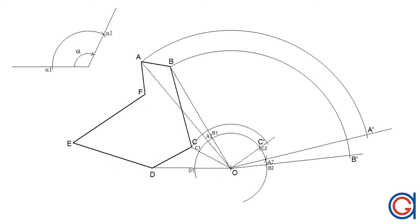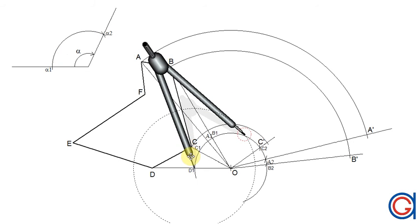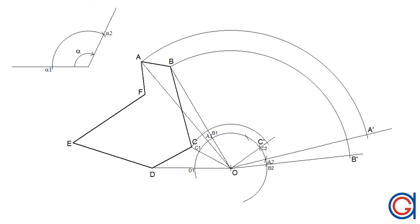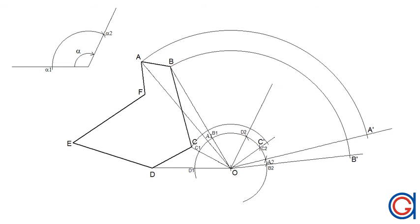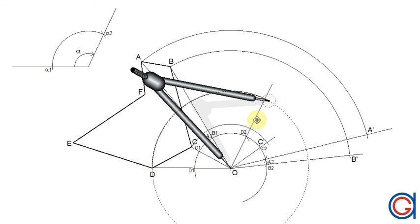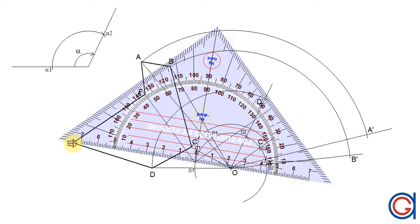We are going to speed up the video and continue this exact same process with all of the remaining vertices. So we are going to obtain our new point D prime, which is the rotation point of our vertex D.